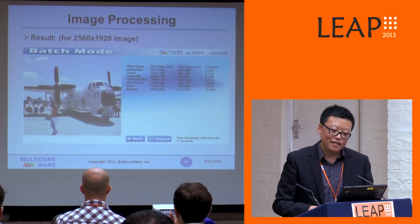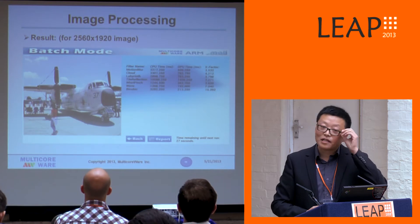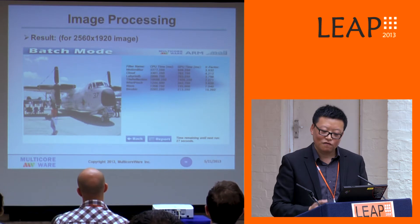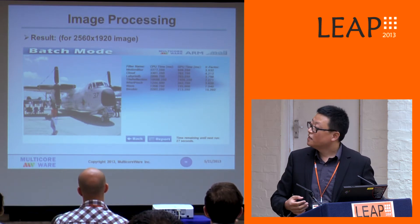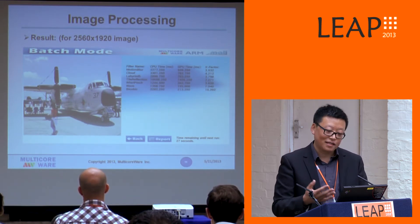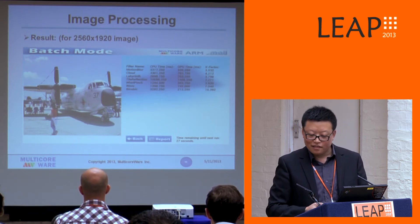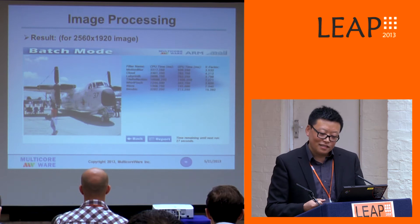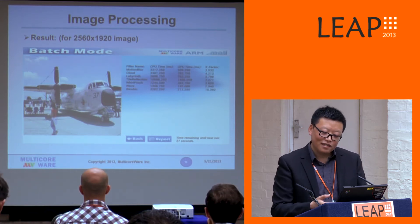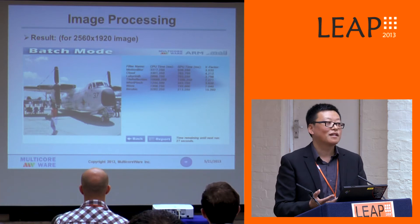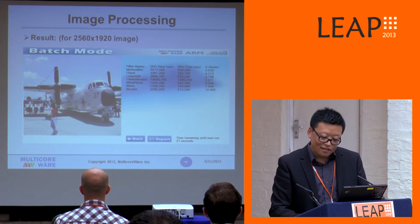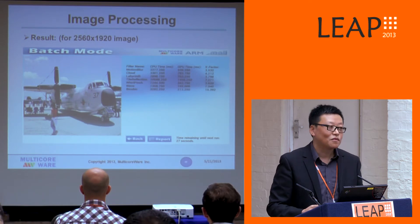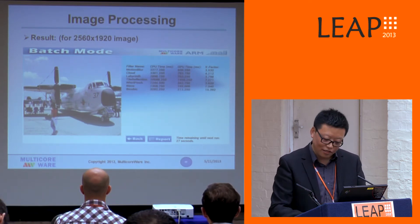Here are the benchmark results for a few selected filters. For the bicubic scaling filter, you can see up to about 15x speedup. Another two filters — wave and tile reflection — are more than 7x. So we are really seeing great performance speedup by using the GPU.